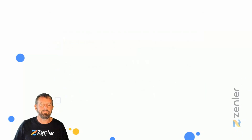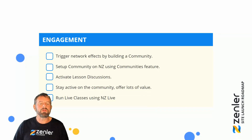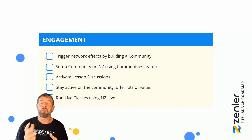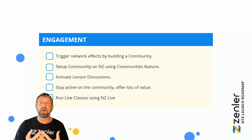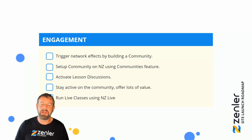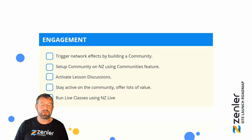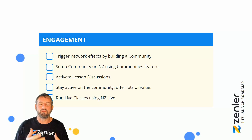For engagement, trigger network effects by building a community. Make sure communities are turned on inside NewZenler — you can find instructions at tutorials.newzenler.com. Set up discussion groups and community features. You can also activate discussions within individual lessons. Stay active, offer lots of value, and run live classes using NewZenler Live to keep your students engaged.